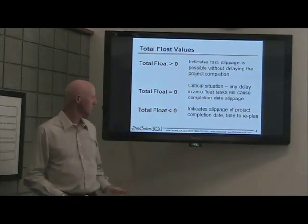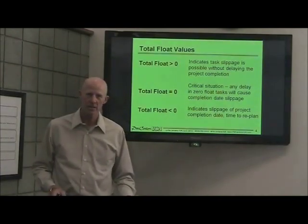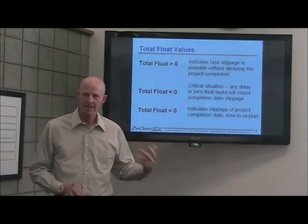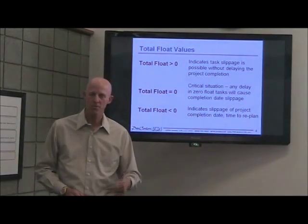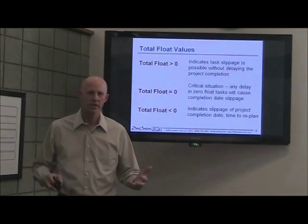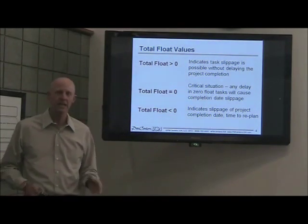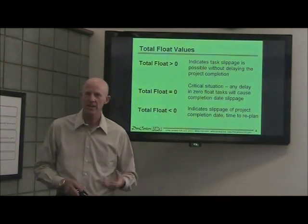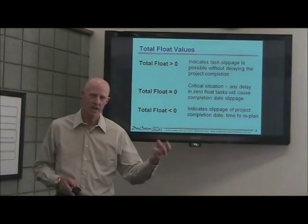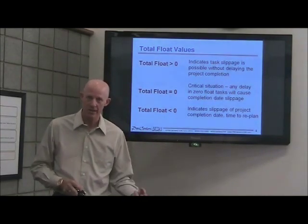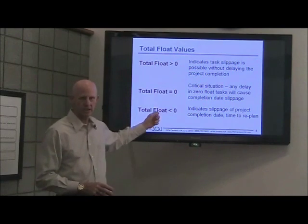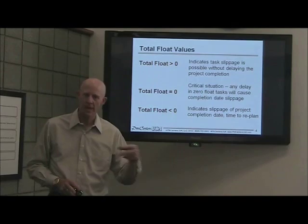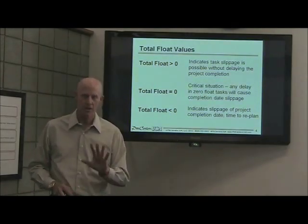If total float is less than zero, it means you're behind schedule. For example, if it's negative five, you are five days behind the date you need to complete the project per the plan. How do you get negative float? You can get it if you put a constraint on your completion date. If you make the project finish date, for example, September 1st and say "finish no later than," you can end up with negative float because it's forcing the schedule to comply with that constraint. So avoid constraints.